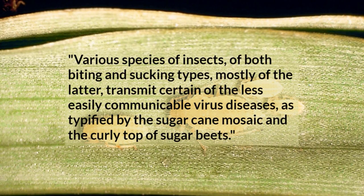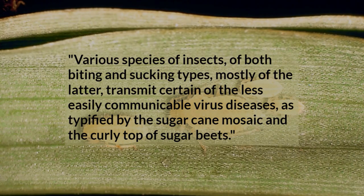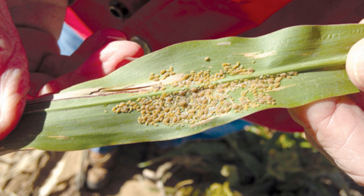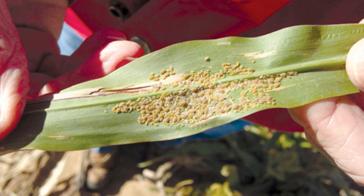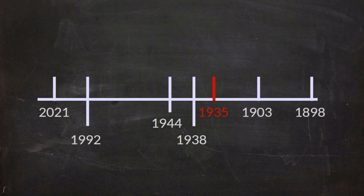Wolfe also reports that various species of insects of both biting and sucking types, mostly of the latter, transmit certain of the less easily communicable virus diseases, as typified by sugar cane mosaic and the curly top of sugar beets. Wouldn't a simpler explanation be that the plants are being damaged by parasitic insects? Things are not looking good on the evidence front for the virus proponents, so now we jump back in our timeline to the 1800s to get amongst the alleged original virus discoverers.